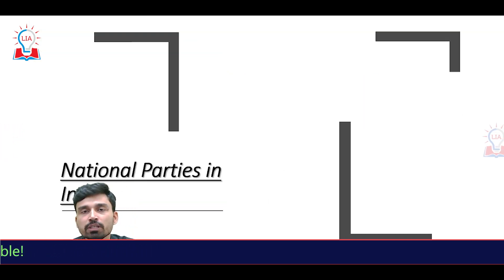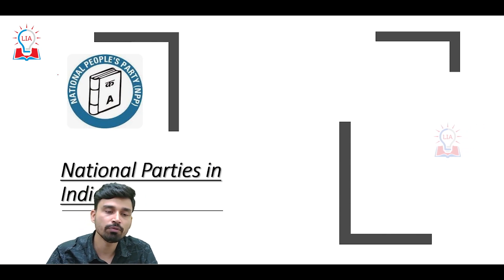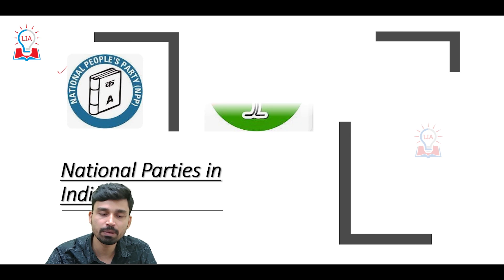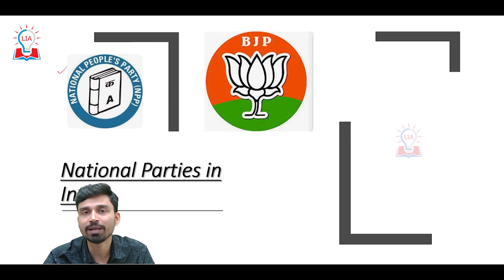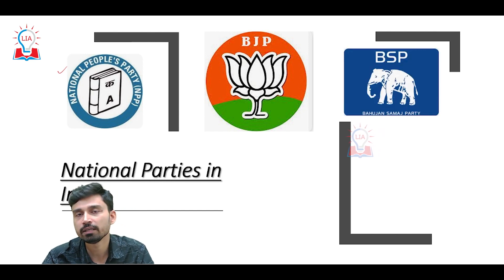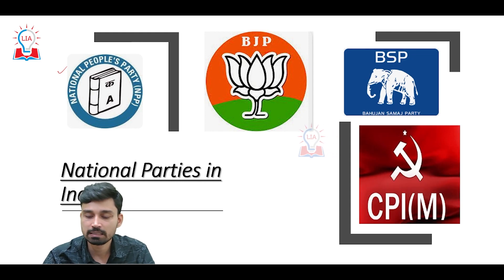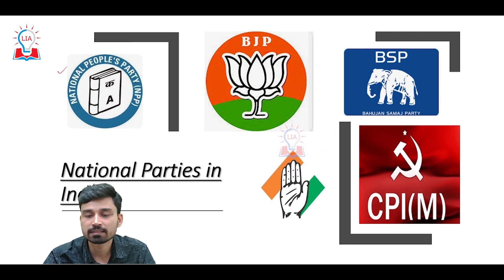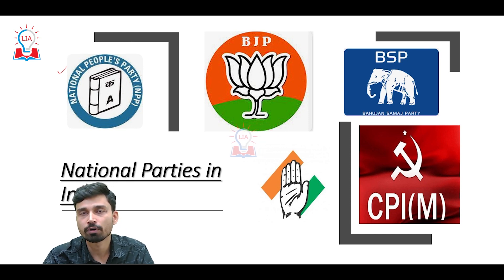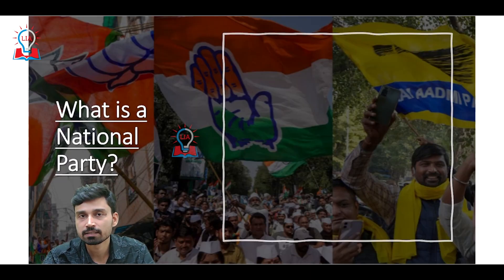With these changes, if we talk about how many National Parties we have in India: we have the National People's Party (NPP), then the Bharatiya Janata Party, the currently ruling government, the Bahujan Samaj Party of Uttar Pradesh, CPI(M), the Indian National Congress, and now joining the list is the Aam Aadmi Party of Arvind Kejriwal. Currently we have a total of six parties enjoying the status of National Party.